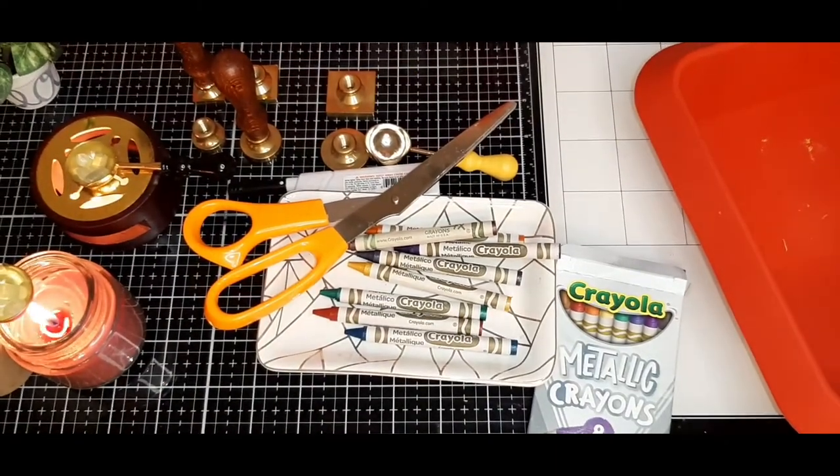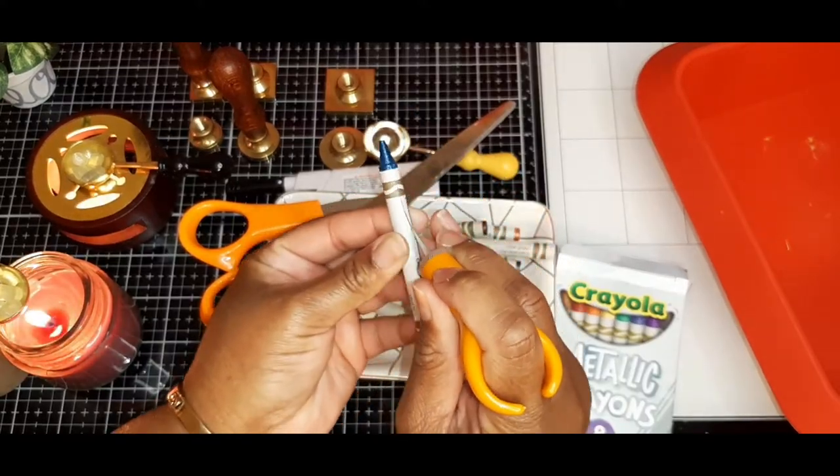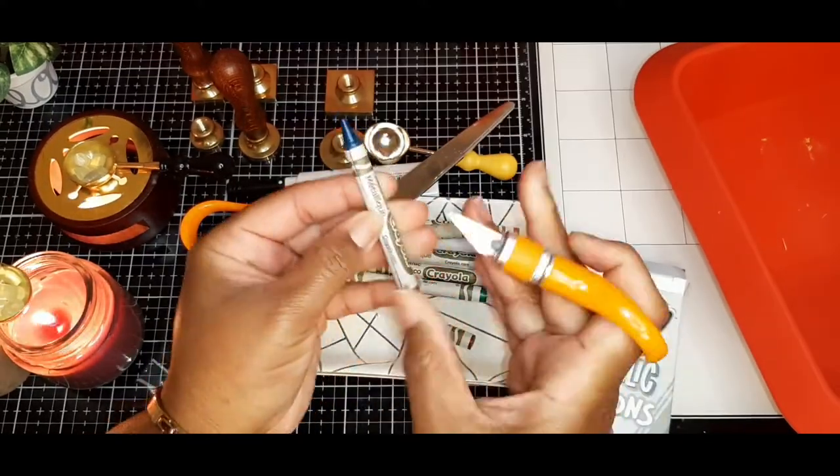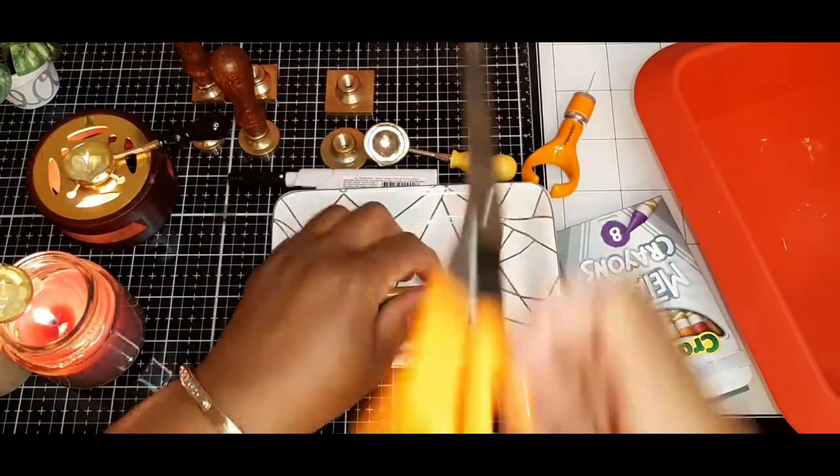So here I'm just using the Fiskars fingertip detailed knife to cut the paper off of the crayon. And it comes off super easy. You guys be really careful when you're doing this.